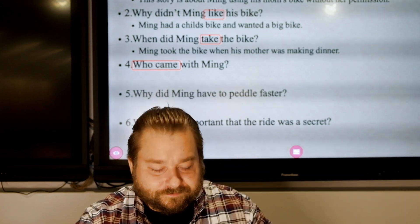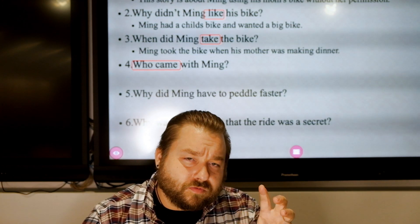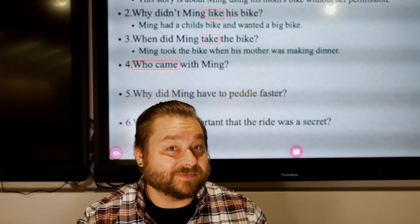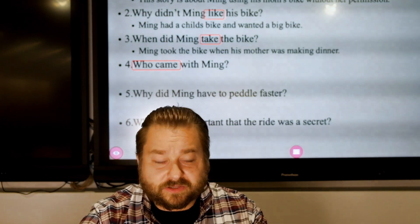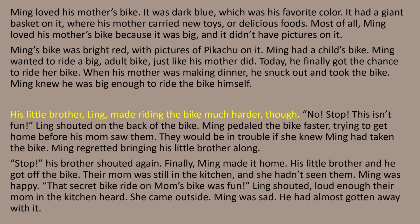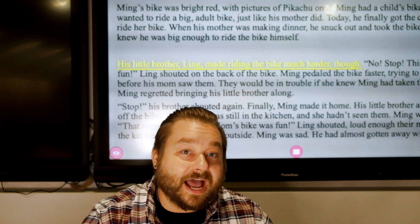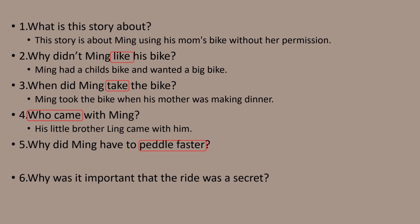Let's look at number four: who came with Ming? We have two parts here — "who" tells us we need a person, and "came" is our verb. So we need to look for someone that came. His little brother Ling made riding the bike much harder, though — so we know Ling was riding the bike too, he came along. Number four: who came with Ming? His little brother Ling came with him.